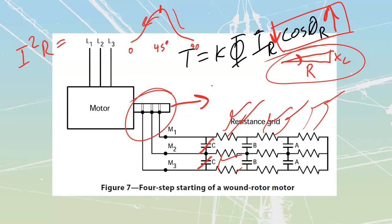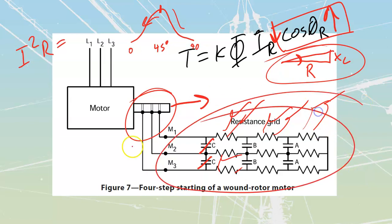That is it for our operation of a wound rotor motor. What we'll have to do next is take a look at how we control them. Now that we know about the operation, let's talk about the control circuits.